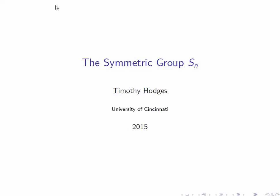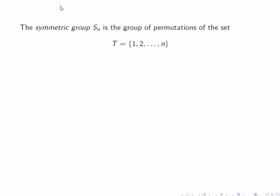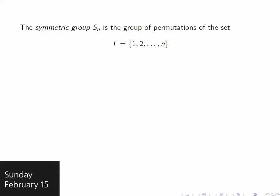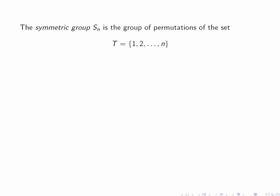The symmetric group Sn is the group of permutations of the set T of integers between 1 and n. Note that by elementary set theory, we can see that Sn has n factorial elements.